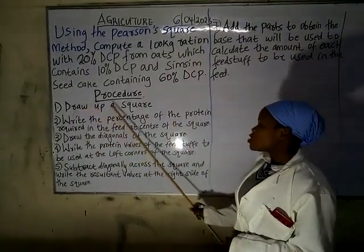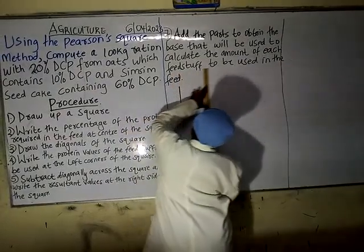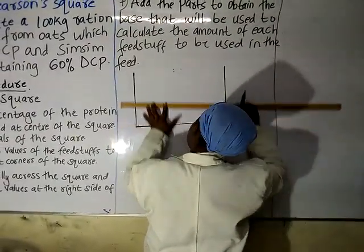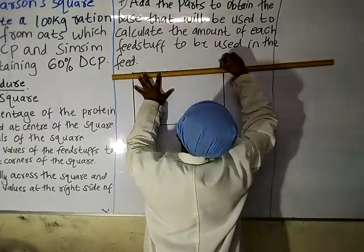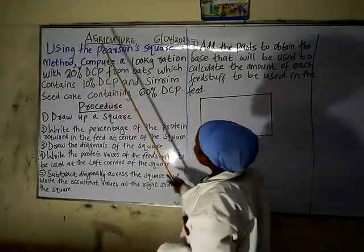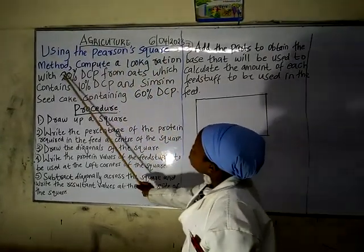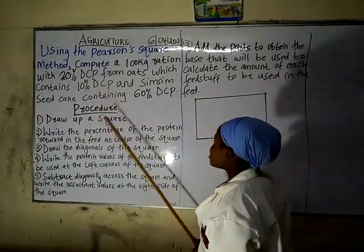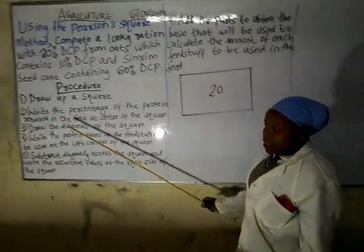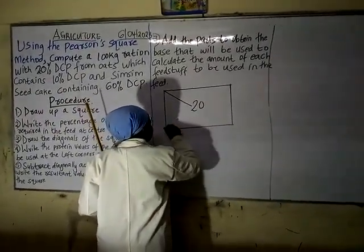First, we need to draw up a square using our ruler. Second, write the percentage of the protein required in the feed at the center of the square. In our question we see that we need 20 percent DCP, so this 20 percent is the percentage of the protein — we are going to put it at the center of the square. The third procedure says to draw the diagonals of the square.